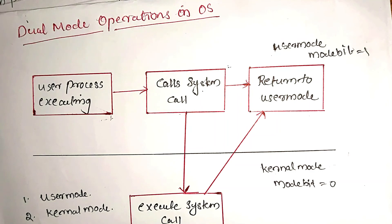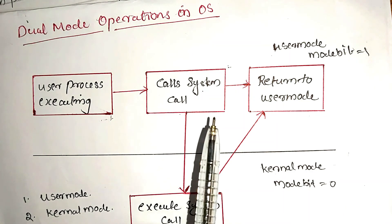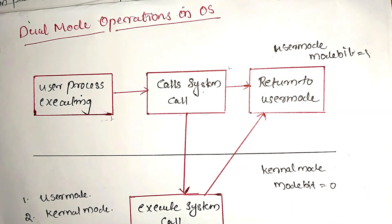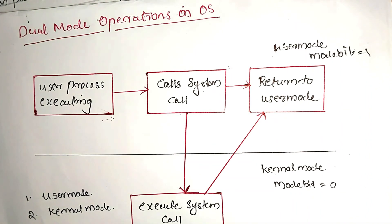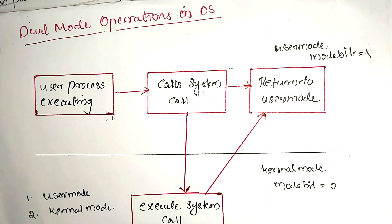The user can execute a process in user mode. When the process needs a service from the operating system, it generates a system call and sends it to the operating system. This causes a transition from user mode to kernel mode. The details will be covered in the next video.